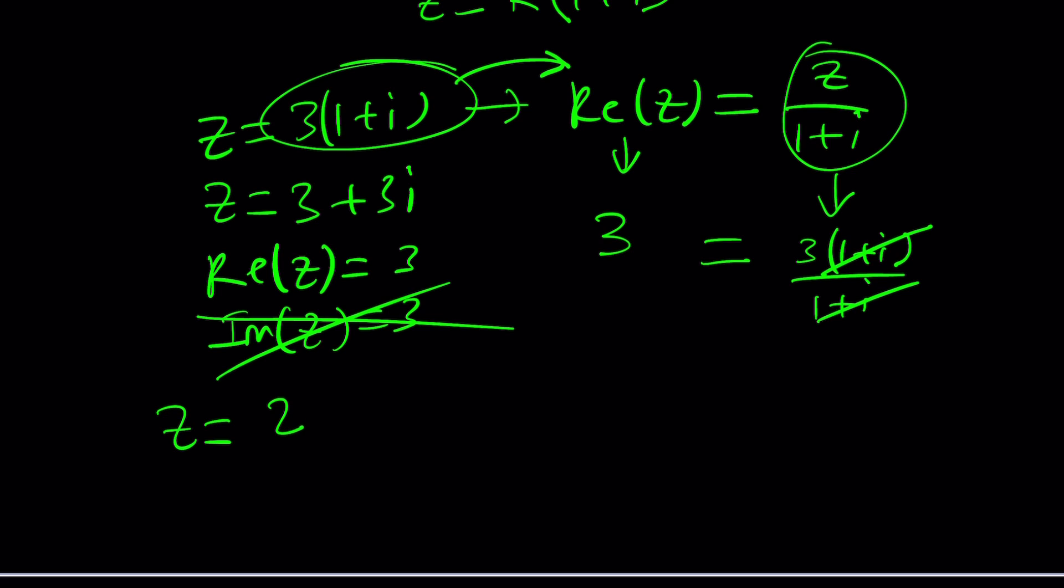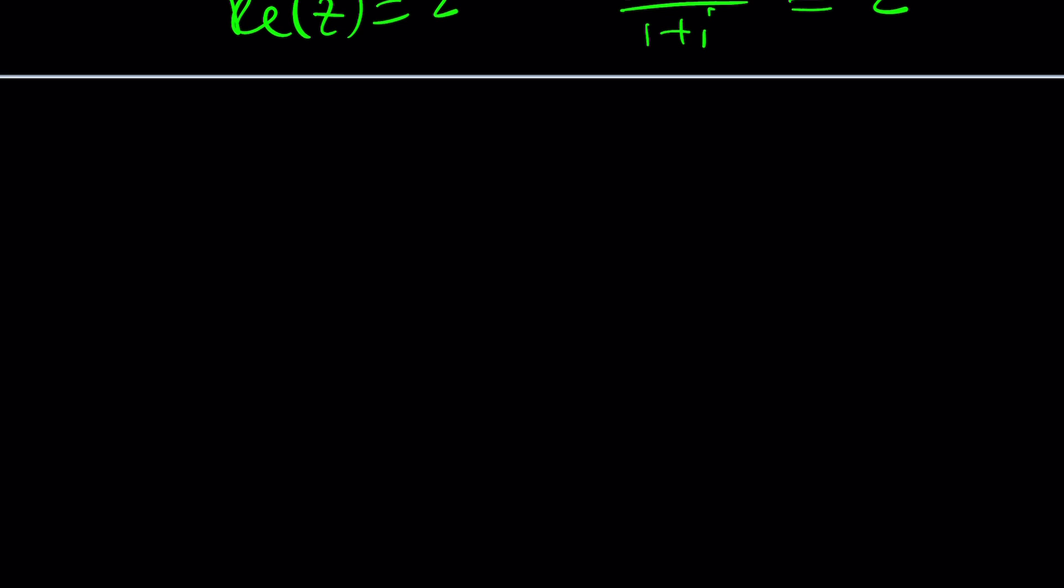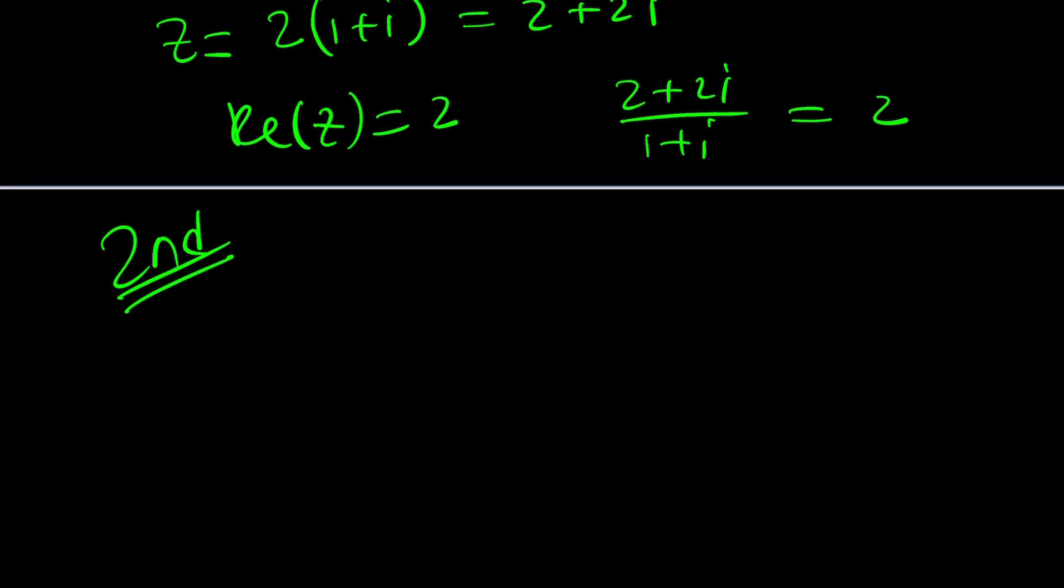What if I try another number? z equals 2 times 1 plus i. This is going to be 2 plus 2i. The real part of z is just going to be 2. And z divided by 1 plus i is just going to be 2. It seems to be working again. What does that mean? Well, you can try a thousand numbers, and even if they all work, you can safely say that these are all the solutions, or this is what the solutions look like. That's not a proof by any means. You kind of need to prove it in the general sense. That's why it's important to adopt a general approach, to use a more generic method. So that was kind of like our first attempt. Let's just call that, and this is going to be our second approach.